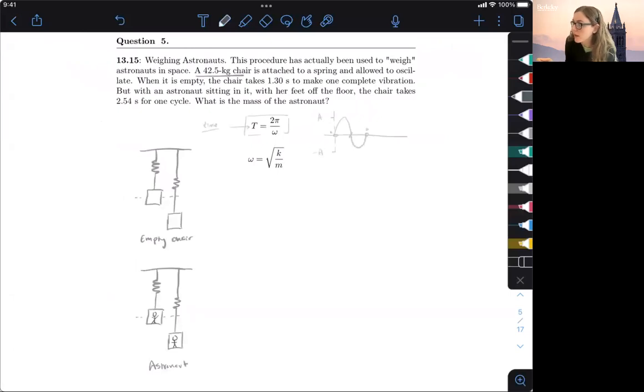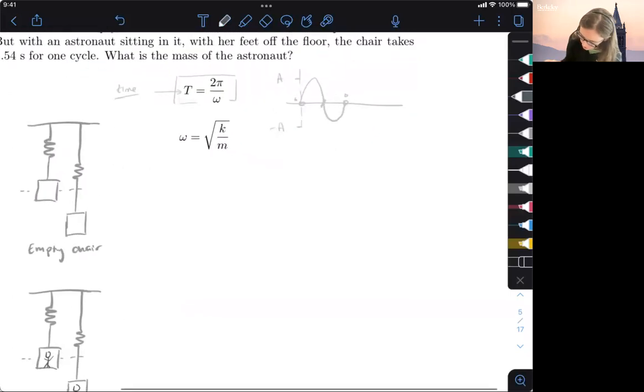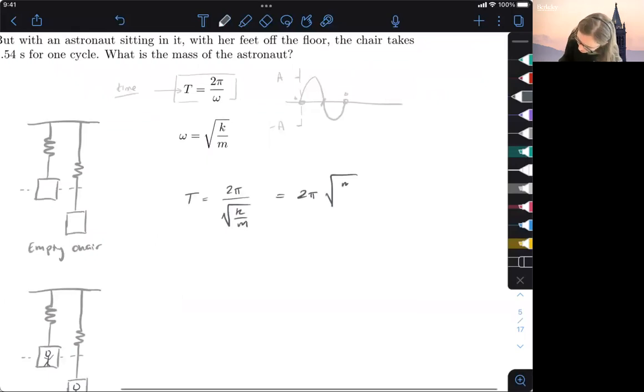All right, let's look at our first general equation here. We're going to put these two together. I'm going to say T equals 2π square root of K over M. And then that's going to turn into, if I'm dividing it, it'll be M over K. So this is my general equation.